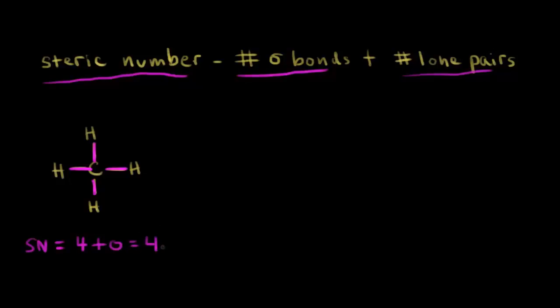In the last video, we saw that in an sp3 hybridized situation we get four hybrid orbitals, and that's how many we need. The steric number tells us we need four hybridized orbitals. So we took one s orbital and three p orbitals, and that gave us four sp3 hybrid orbitals. So this carbon must be sp3 hybridized.